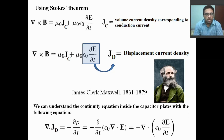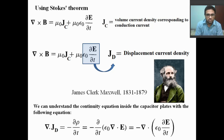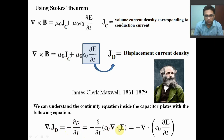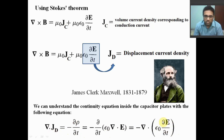If we try to understand the same problem from the continuity equation: inside the capacitor there is a displacement current density Jd. If we write del·Jd, that will be −∂ρ/∂t. Now ρ = ε₀ del·E from the first Maxwell equation. If we keep the divergence outside the parenthesis, it becomes del·Jd = −∂/∂t(ε₀ del·E). So we can see that Jd is basically ε₀ ∂E/∂t, which is also what we explained earlier.